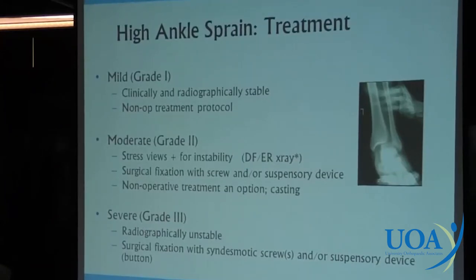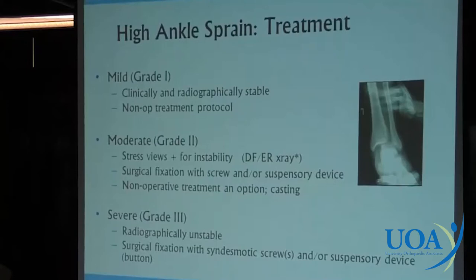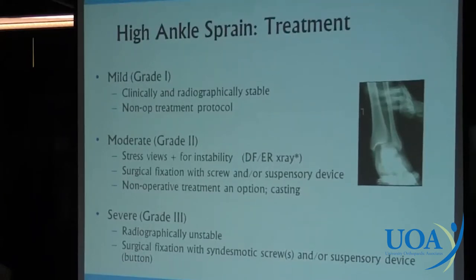For mild high ankle sprains — clinically and radiographically stable with no widening of the syndesmosis even on stress views — we typically use a non-operative protocol. Moderate or grade two means that on stress views the syndesmosis is wide open; in my hands that needs surgery. You can fix that with a screw or a suspensory device. You could treat it non-operatively, but most of us would not. Grade three — where the widening or instability is visible without requiring a stress view — those are automatic for surgery.